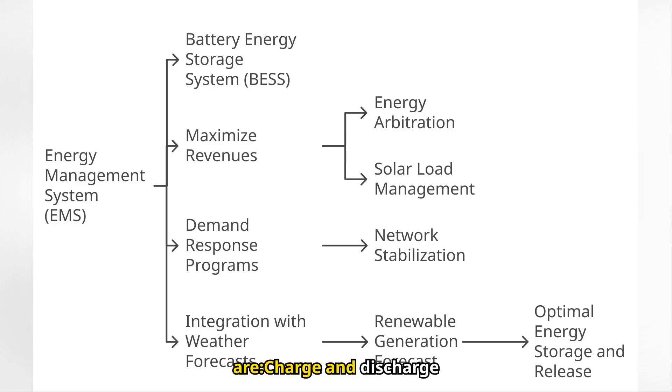The key functions of the EMS are charge and discharge optimization, manages energy flow through strategies such as arbitrage, storing cheap energy to sell when prices are high, demand response management participates in programs that stabilize the grid during consumption peaks, generating additional revenue, weather forecasting integration anticipates renewable generation using weather data, adjusting the operation to maximize efficiency and sustainability.